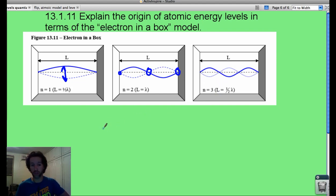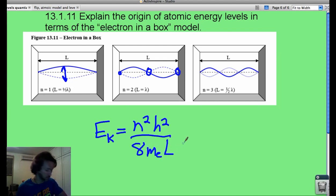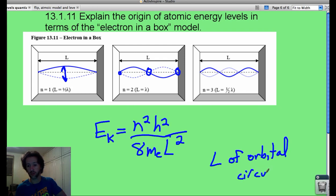And it turns out, if you use this model, you can figure out the kinetic energy of an electron using this really bizarre equation. Now, what this is, l, is what we're going to call the length of the orbital circumference.